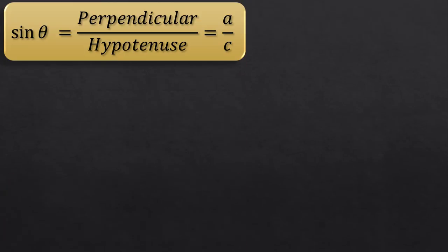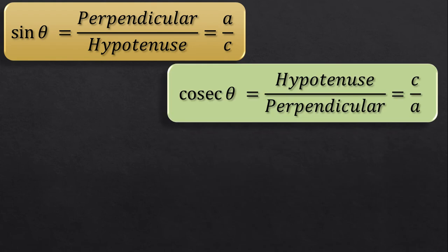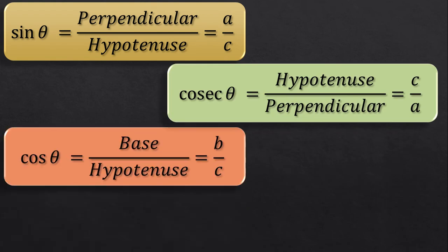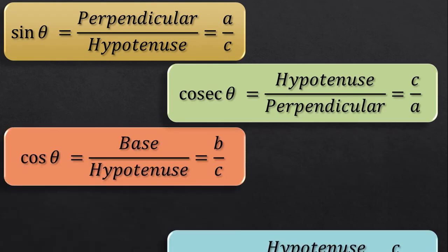So next step is to put the values of base, hypotenuse and perpendicular of our right angle triangle in these formulas like so.